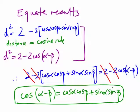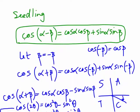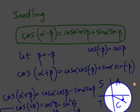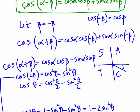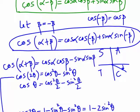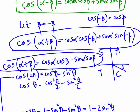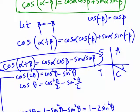From this seedling result we're going to grow a garden of trigonometric results. We start by letting β equal −β. Since cos(−β) = cos β and sin(−β) = −sin β, we can substitute to obtain the cos(α + β) result: cos(α + β) = cos α cos β − sin α sin β.